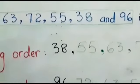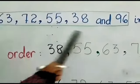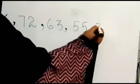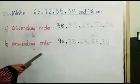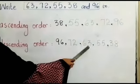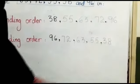After 55, which number is smaller? Yes, 38. 38 is the smallest number. So the numbers in descending order are 96, 72, 63, 55 and 38.